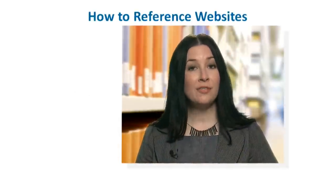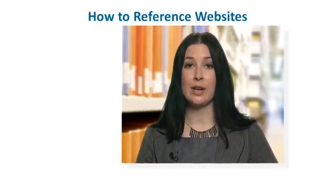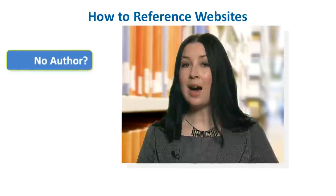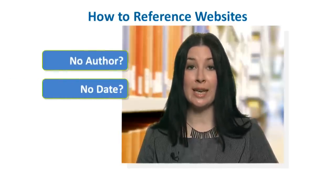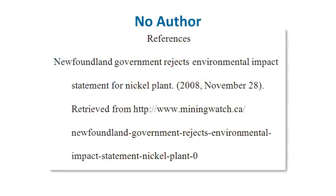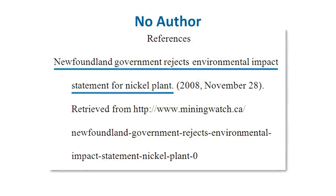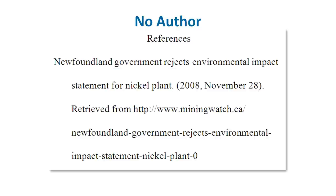However, it's often difficult to locate all the necessary information for websites. Often no specific author is given, or it's difficult to determine a publication date. If there is no author given, start with the title of the webpage or web document instead, followed by a period, then the date in parentheses. If there is no date indicated, use the abbreviation n.d. to indicate no date.